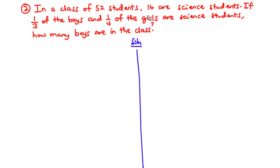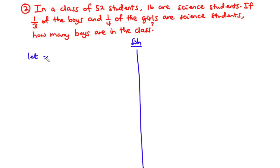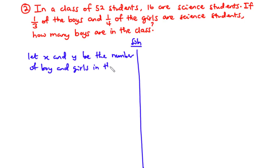We are told there are 52 students in the class and 16 of them are science students. We don't know the number of boys or girls, so let x be the number of boys and y be the number of girls in the class respectively.